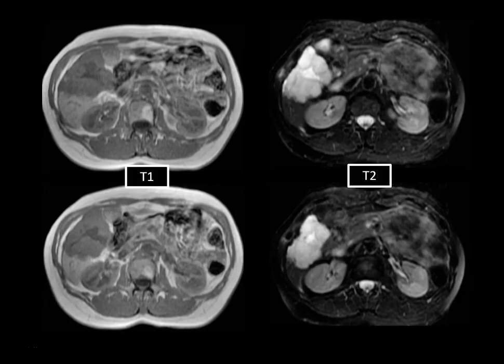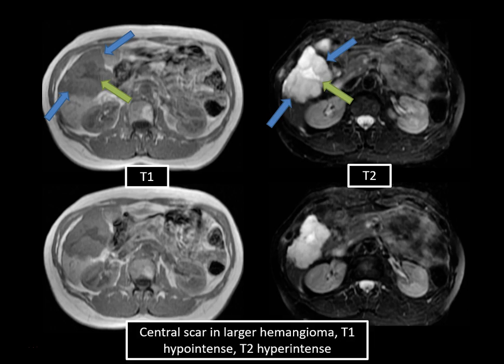The third enhancement pattern on MRI involves a large hemangioma with a central scar. On T1 and T2-weighted images, the central scar is T1 dark and T2 bright relative to the remaining hemangioma. The central scar in these larger hemangiomas should be T1 dark and T2 bright, while the surrounding aspect of the hemangioma remains homogeneous — particularly on T2-weighted images.